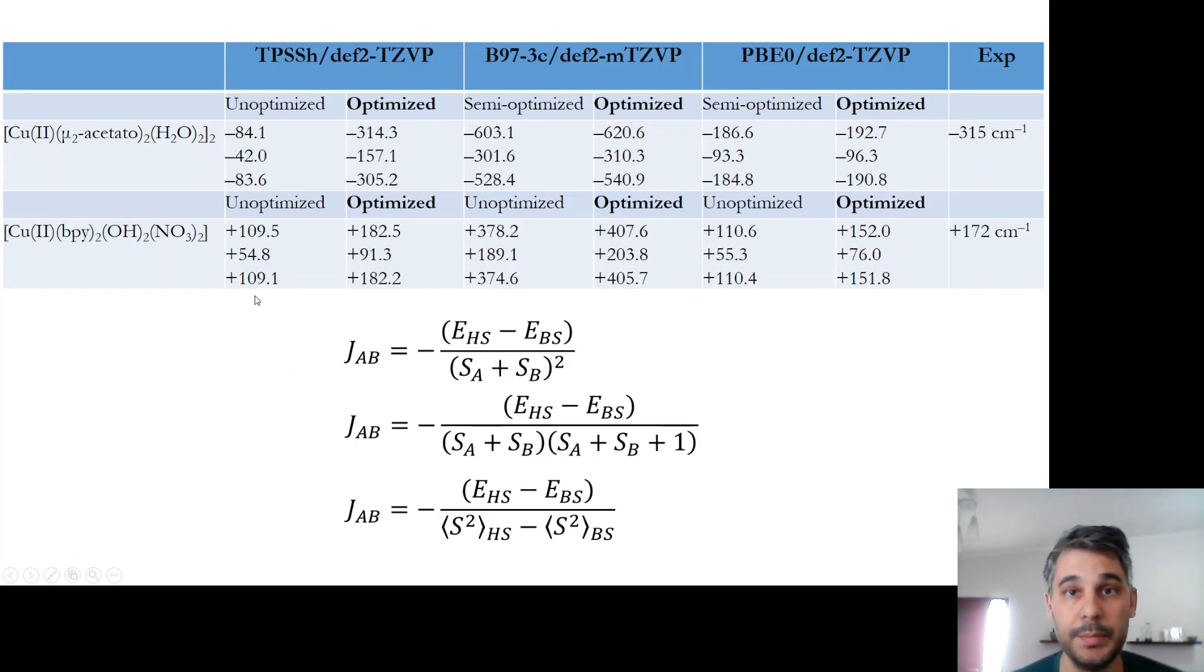For the bipyridine complex, plus 110 when the experimental value was plus 172. This shows slightly that the crystal structure for the copper bipyridine complex was closer to the DFT optimized structure. Now, on the second column, we have the optimized values. The optimized exchange coupling for the copper acetate is minus 305 reciprocal centimeters, which is very close to minus 315. For the copper bipyridine complex, it is plus 192 reciprocal centimeters, which is quite close also to plus 172.